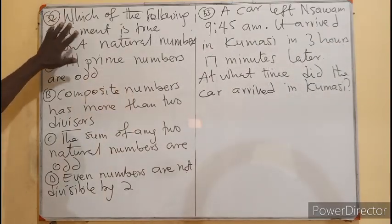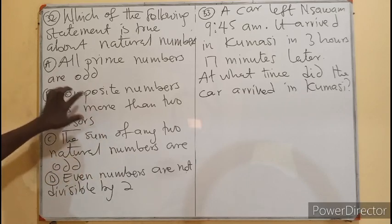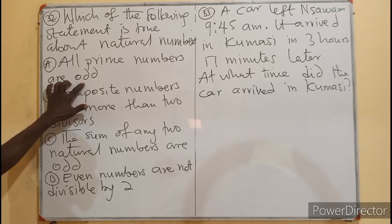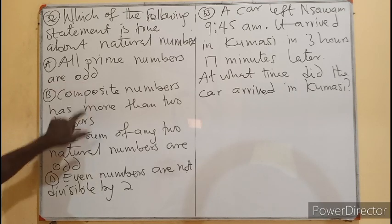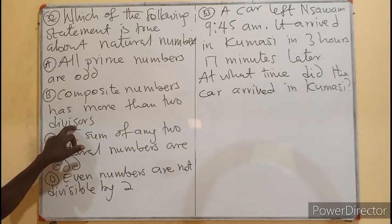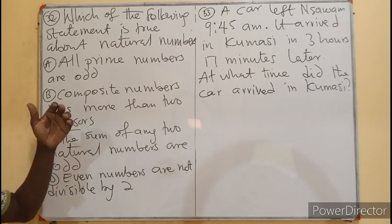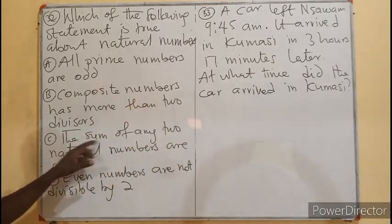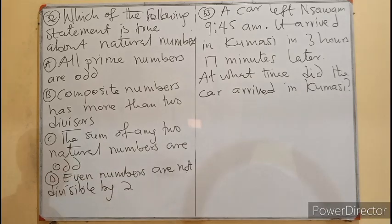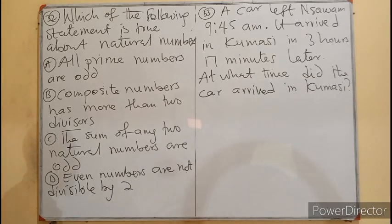Question 32: Which of the following statements is true about natural numbers? Statement 1: All prime numbers are odd — this is false because 2 is a prime number which is an even number. Statement 2: Composite numbers have more than 2 factors — so if they have more than 2 factors, they have more than 2 divisors. Statement 3: The sum of any 2 odd numbers is odd — which is false. Statement 4: Even numbers are not divisible by 2 — which is also false. So the only answer here is B.